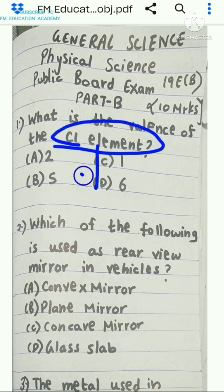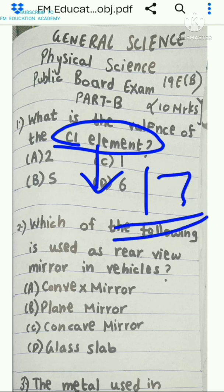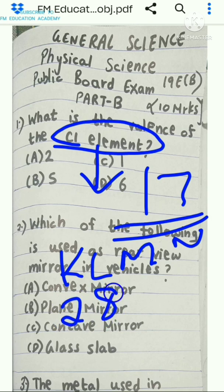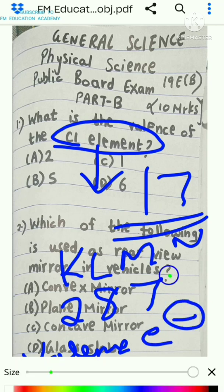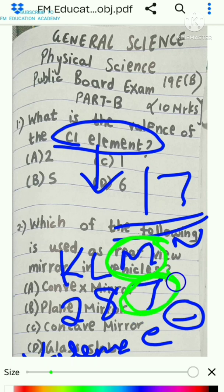For this, we need to know the atomic number of chlorine, which is 17. So how can you write 17 distributed in shells? 2 plus 8 is 10, and 10 plus 7 is 17. Now, valence electrons are the number of electrons in the outermost shell. For chlorine, the outermost shell is the M shell, which has 7 valence electrons.